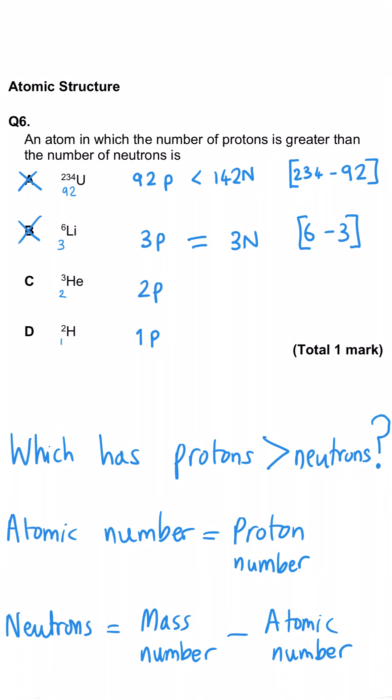For helium, 3 minus 2 is 1, so our neutrons are fewer than our protons. And so C is the correct answer. We don't even need to work out hydrogen.